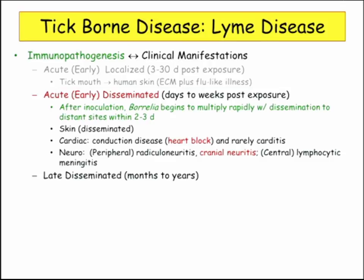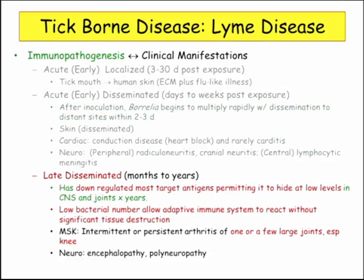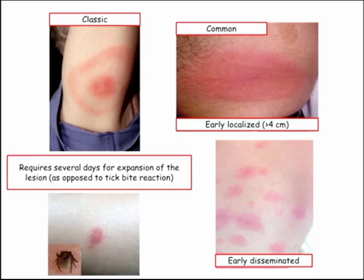In late disseminated disease, the Borrelia down-regulates its antigens and just hides. The late manifestations are really an immune system response to the remnants of the spirochetes — persistent infection. The knee is commonly affected, and big effusions are classic.